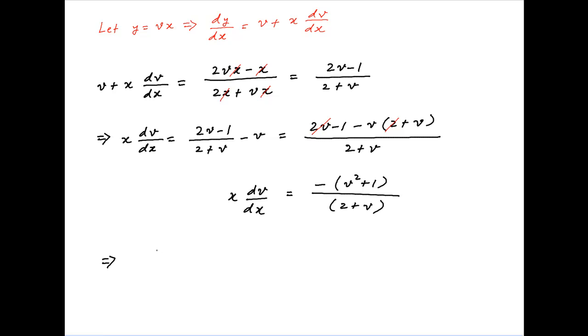Separating the variables, this can be written as 2 plus v divided by v squared plus 1 dv is equal to minus dx upon x.